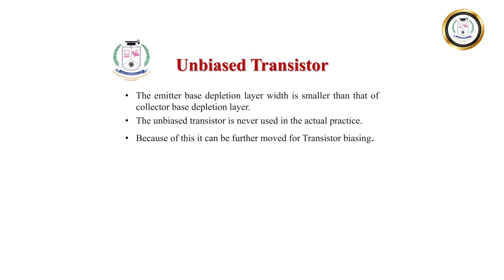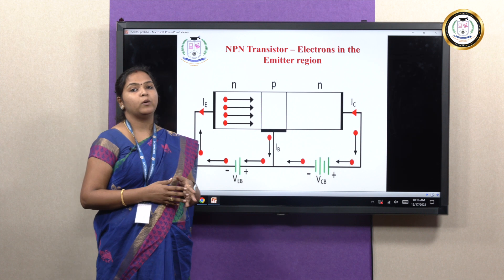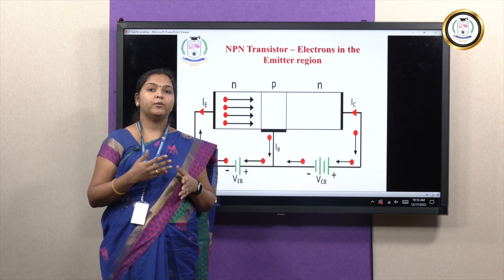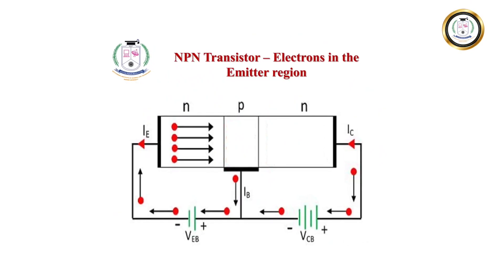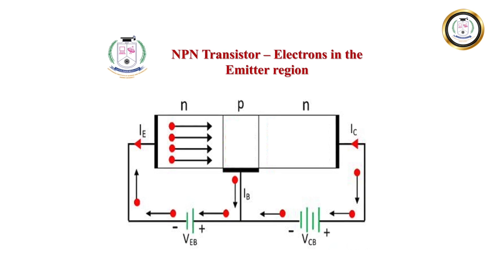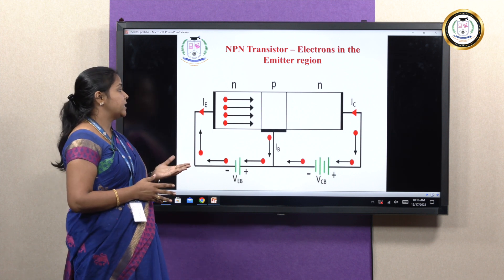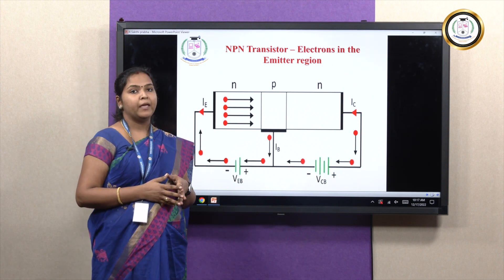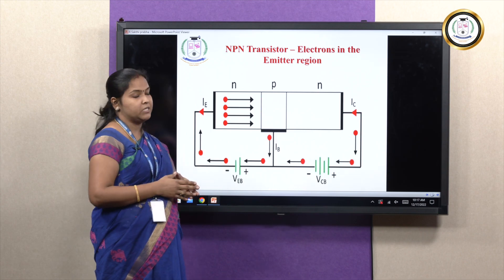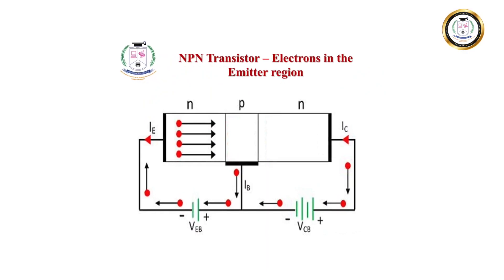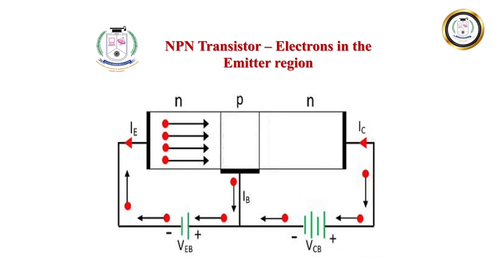For this reason, we move further to transistor biasing. Transistor biasing basically means applying an external battery voltage to the transistor and analyzing the performance and characteristics of the transistor. Let us initially start with the working principle of an NPN transistor. Here, the emitter as well as the collector is made up of N-type material and the base region is made up of P-type material.